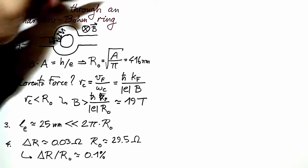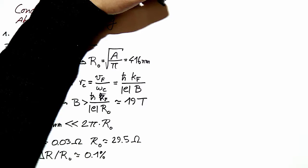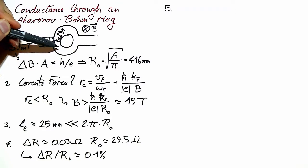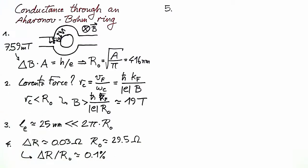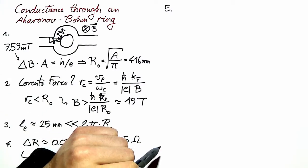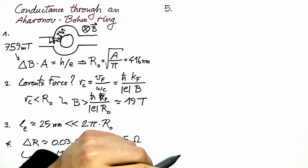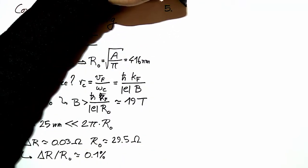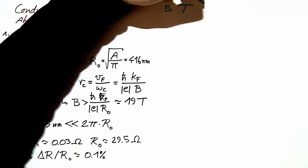First, we want to consider a possibility that the partial waves are not equally partitioned in the two arms of the ring. To figure out what happens in that case, we calculate the transmission of the ring.